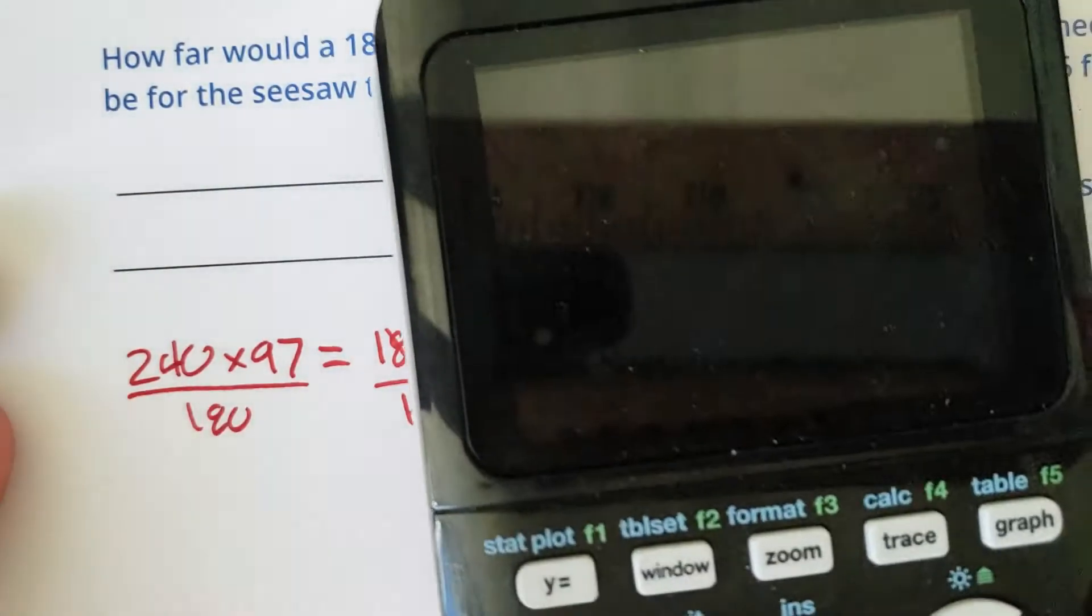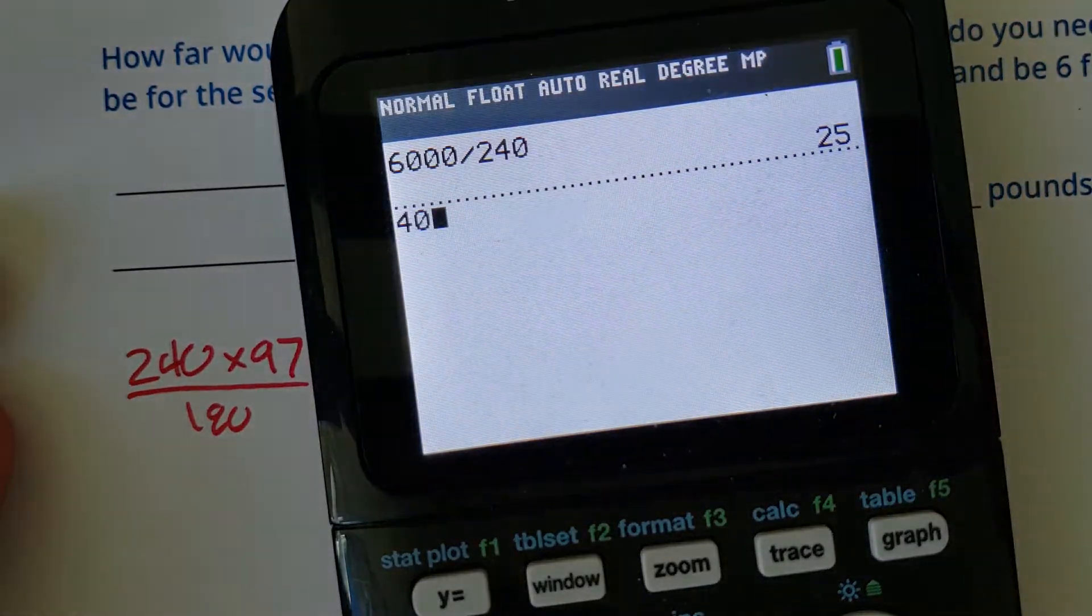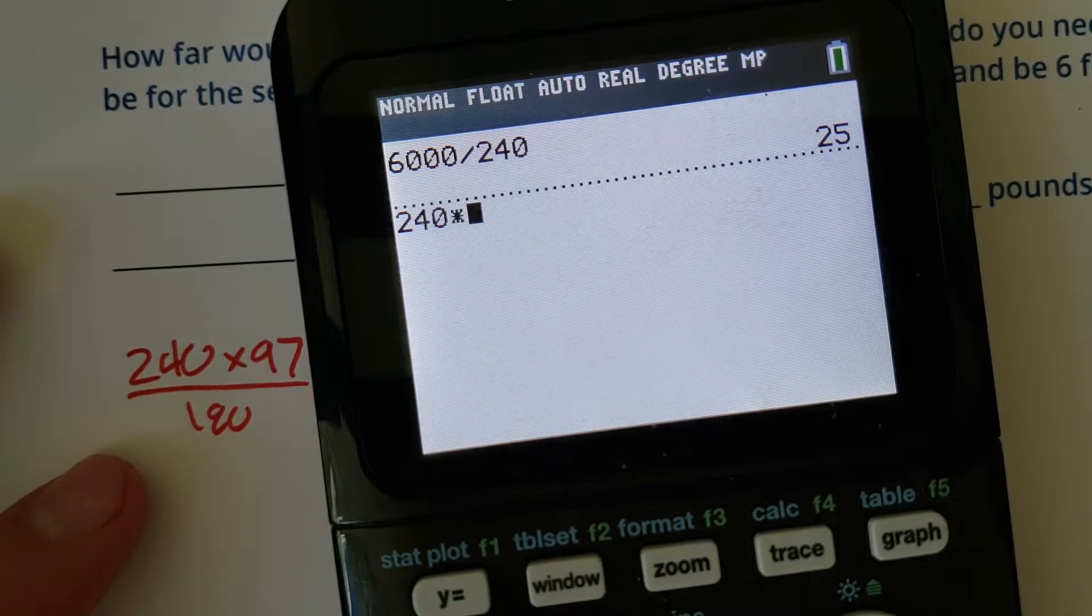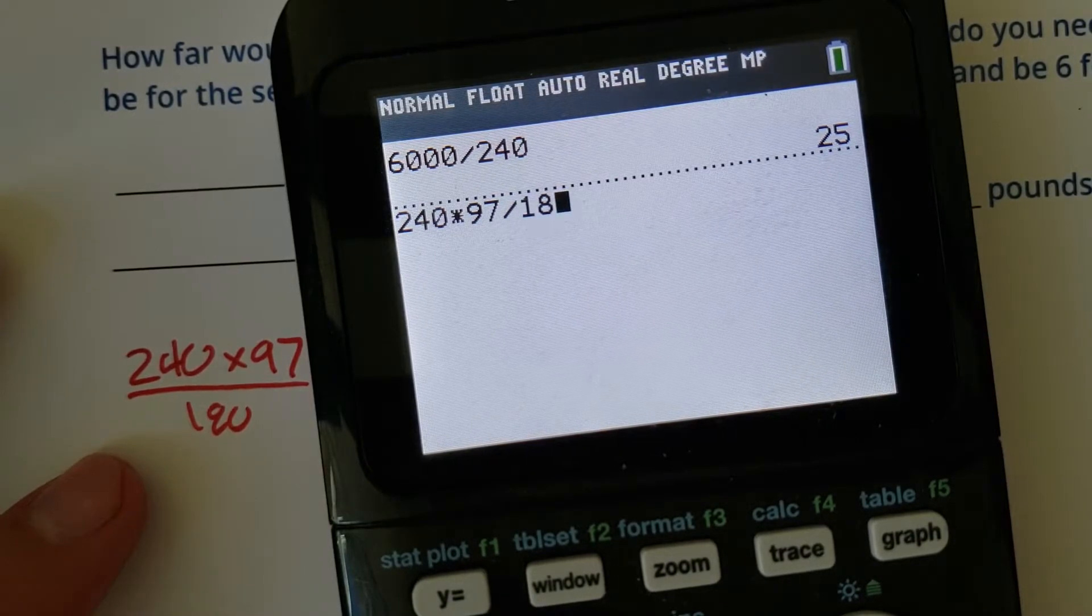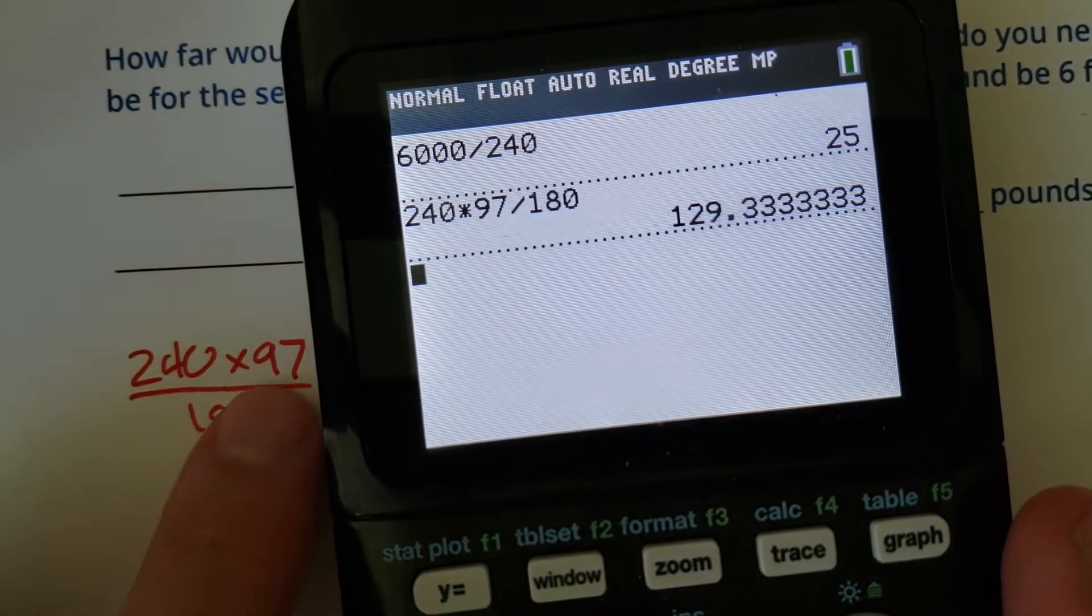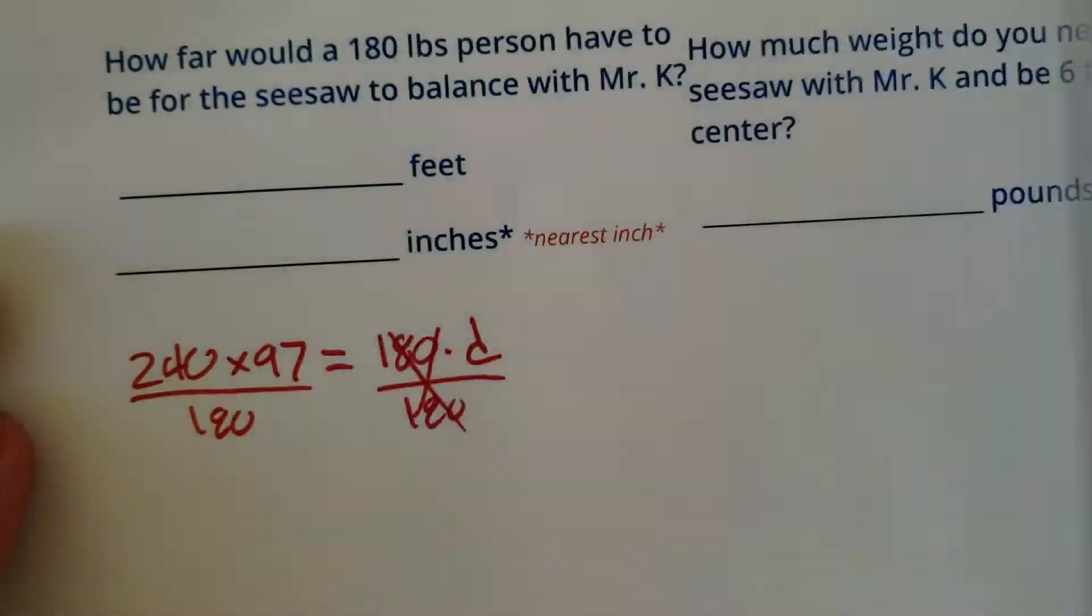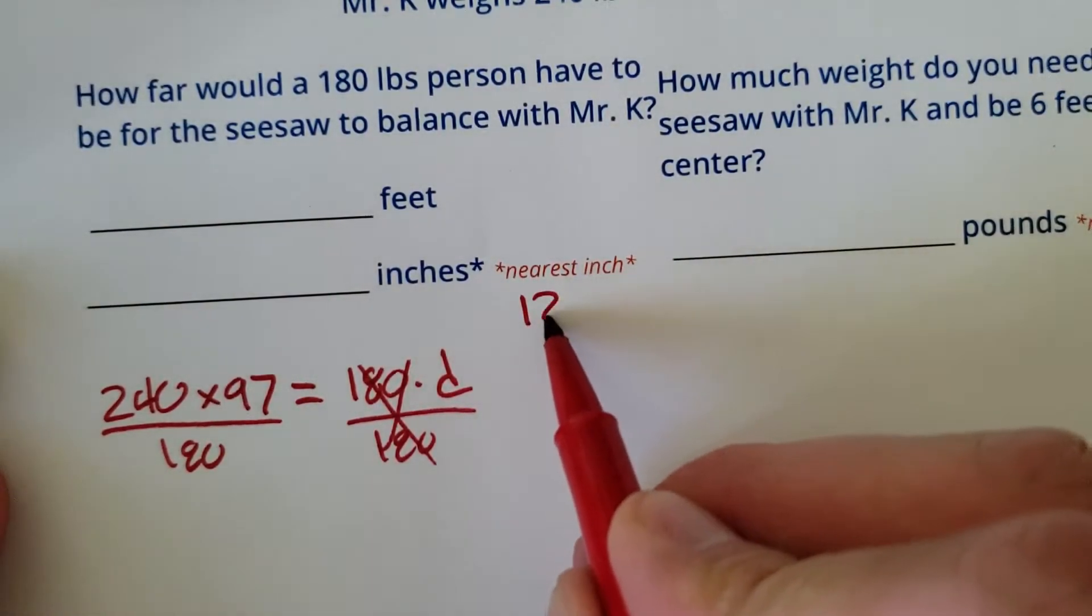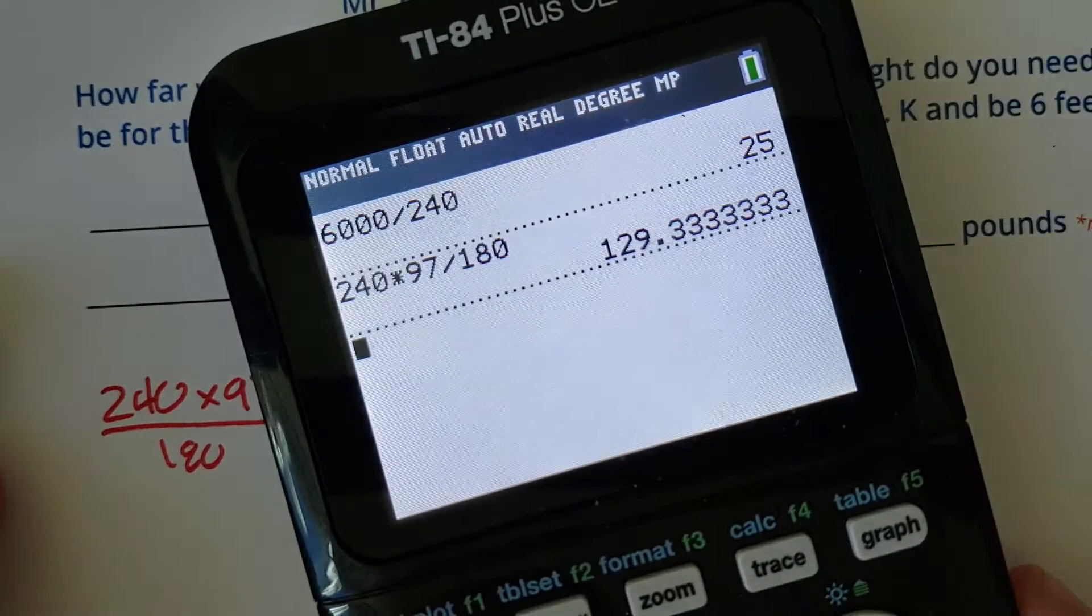So here we go. Let's do some multiplication. 240-pound Mr. K times 97 divided by 180. They need to be 129.3 repeating inches. Yeah, my distance was in inches, so their distance is in inches. So to the nearest inch, 129, all right?